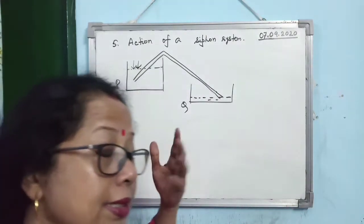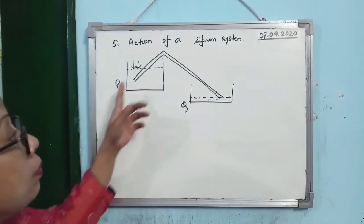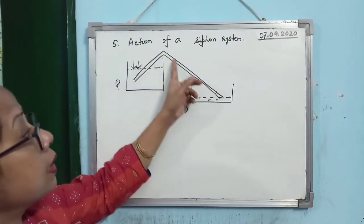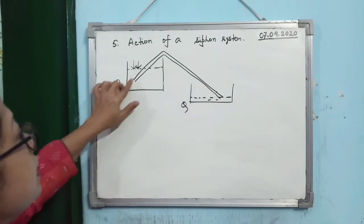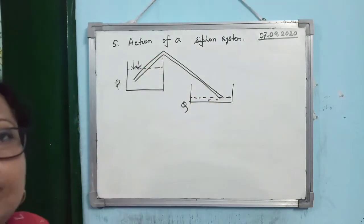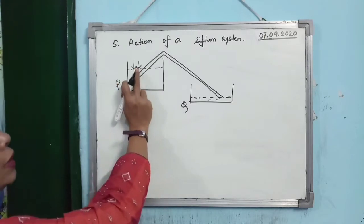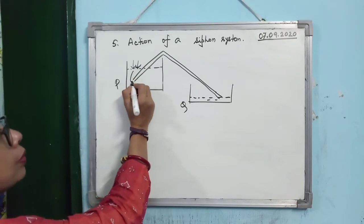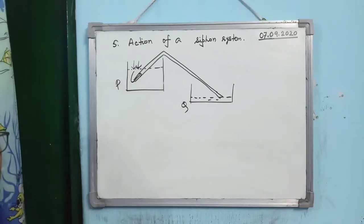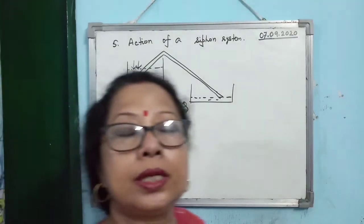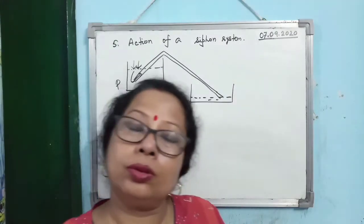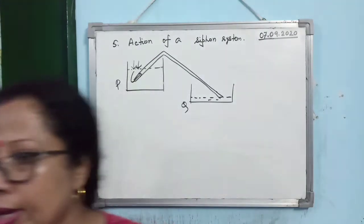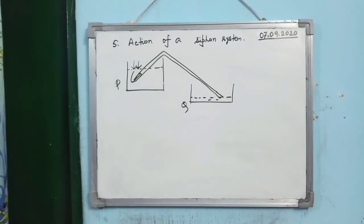The explanation is the same: sucking air from the tube creates a low pressure region inside, while atmospheric pressure outside acts on the liquid. So the liquid moves from high pressure to low pressure, enters the tube, and flows down into Q. Atmospheric pressure makes all of this possible in daily life.